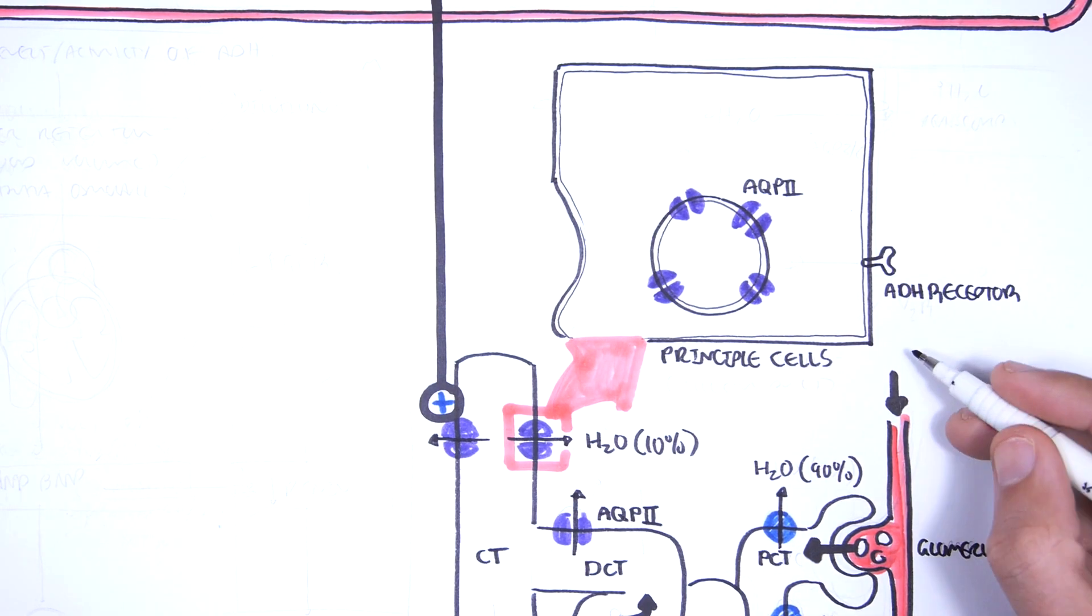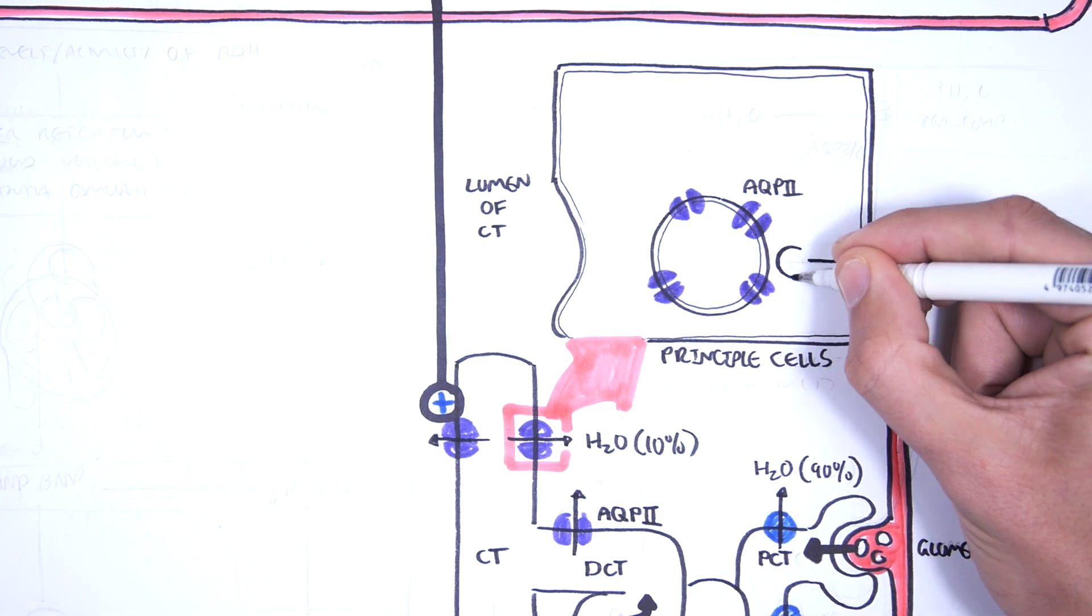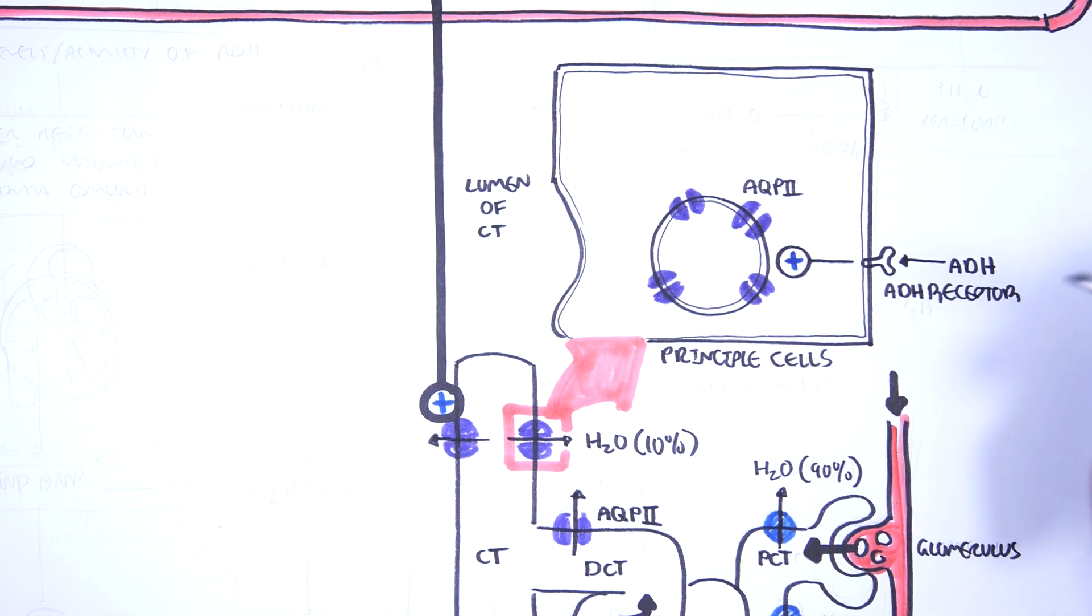ADH will travel by blood and travel to the nephron. ADH will bind onto ADH receptor on the basal surface, so the bottom part of the principal cells.